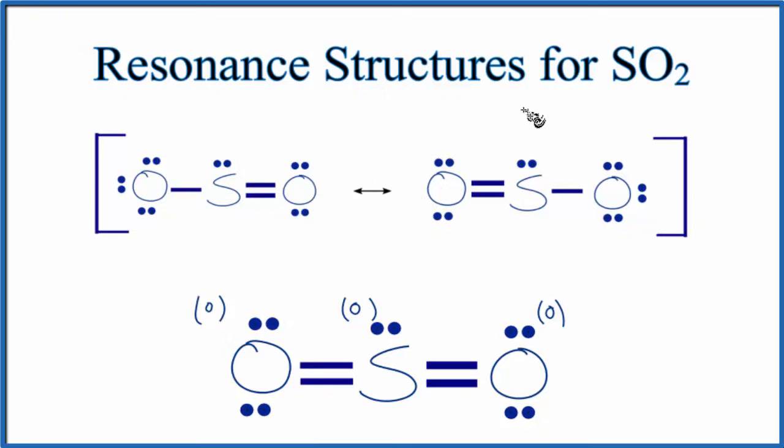So this is Dr. B with the resonance structures for SO2. This is really kind of what theory tells us that there would be just this here. But in reality, these two resonance structures here really accurately represent what we'd see in the lab. And that actual structure would be an average or a combination of these two. This is Dr. B, and thanks for watching.